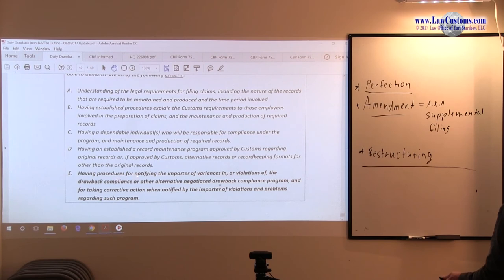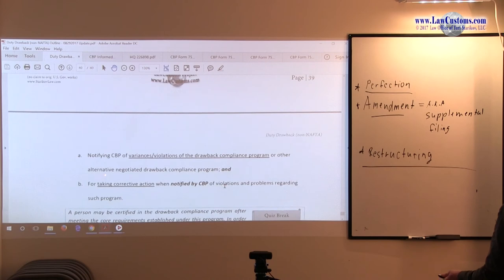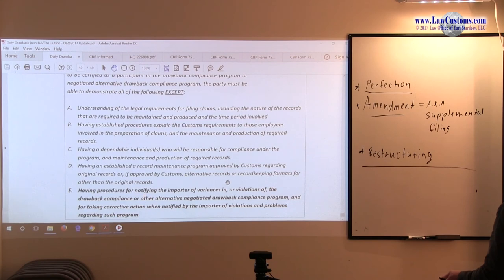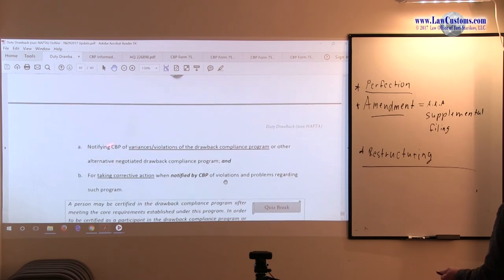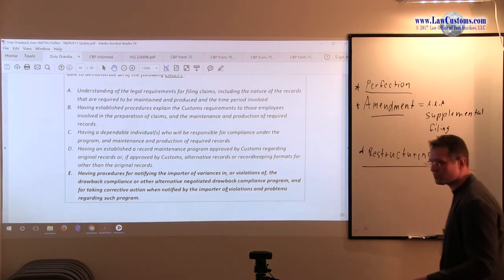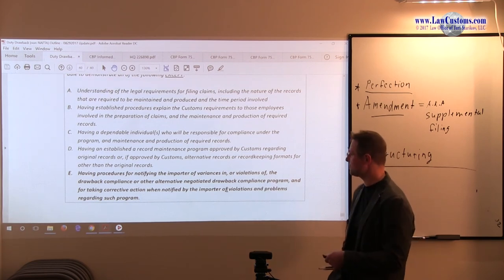E. Having a procedure for notifying the importer for variances or violations. Alright, do we have that on the list? So, we have a procedure for notifying customs. Here, they suggest that it should be the importer who is notified. No. You should notify customs, alright. Corrective actions. Take corrective actions when notified by customs, not when notified by the importer of violations. So, importer here is incorrect placement of words. It should be CBP, Customs Bureau of Protection, or simply customs, not the importer. Therefore.